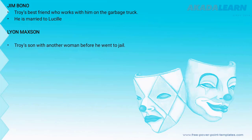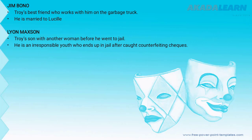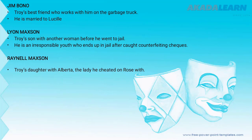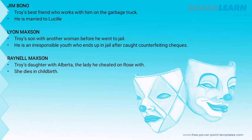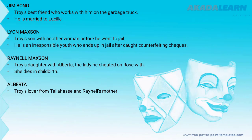Lyon Maxson is Troy's son with another woman before he went to jail. He is an irresponsible youth who ends up in jail after having been caught counterfeiting checks. Raynell Maxson is Troy's daughter with Alberta, the lady he cheated on Rose with. Alberta was Troy's lover and Raynell's mother. She worked at the local bar and dies while giving birth, while Raynell survives and stays with the family.